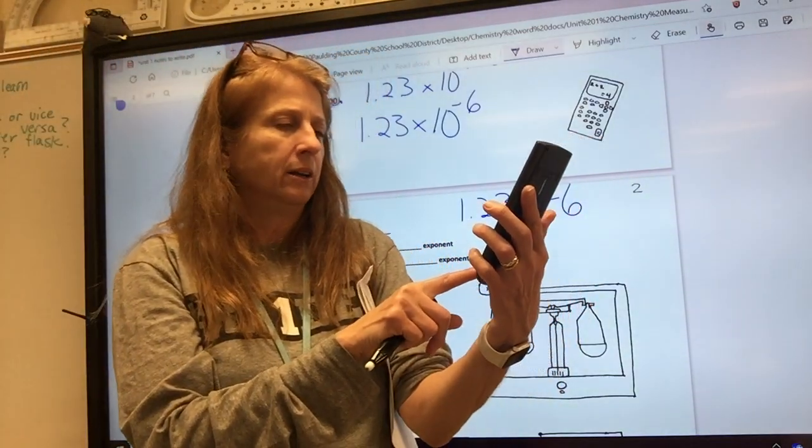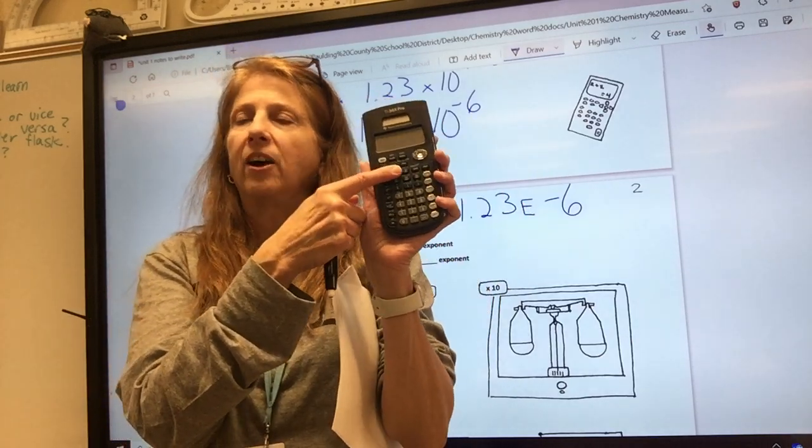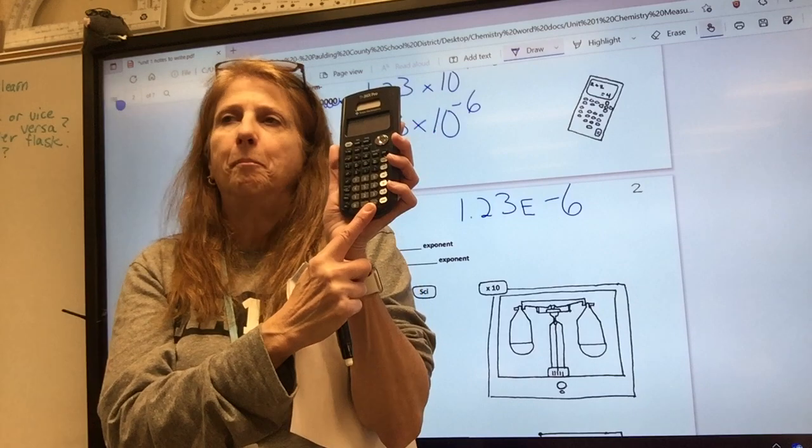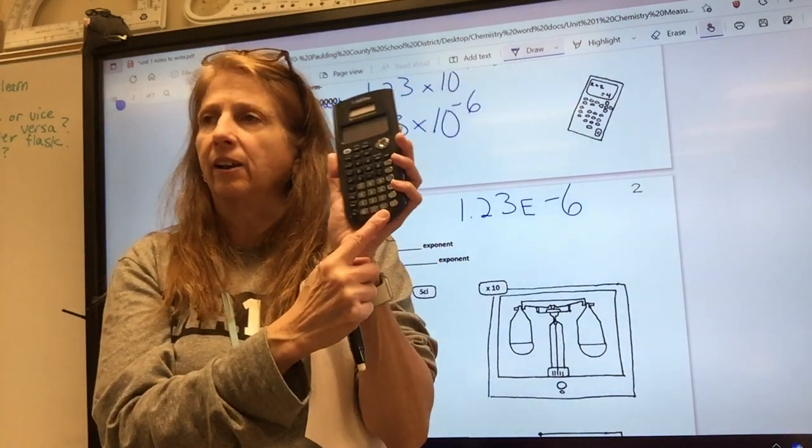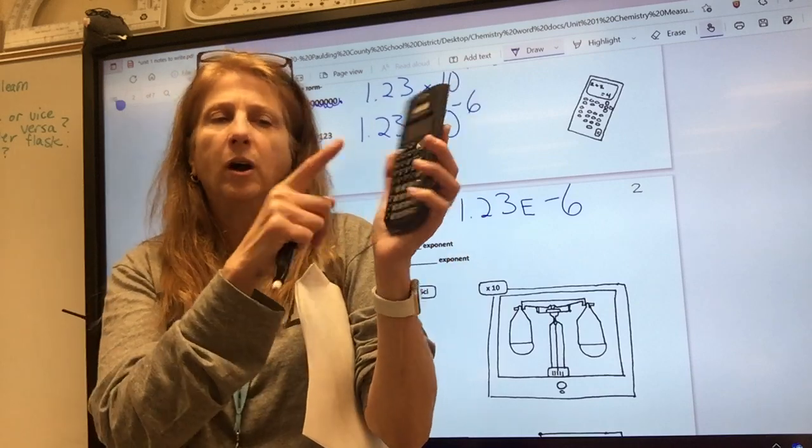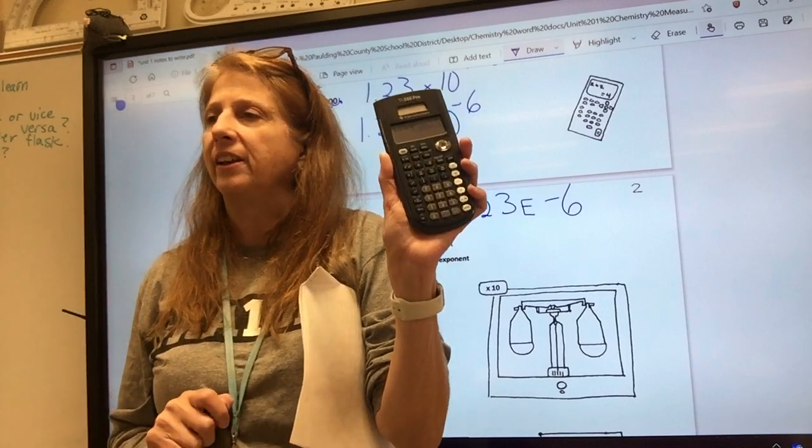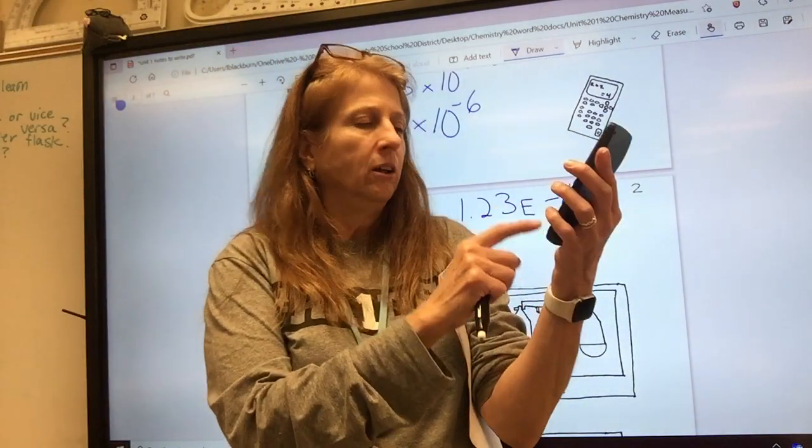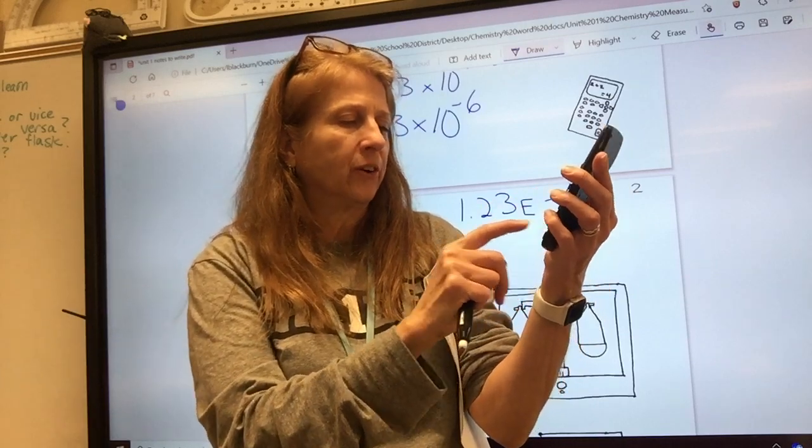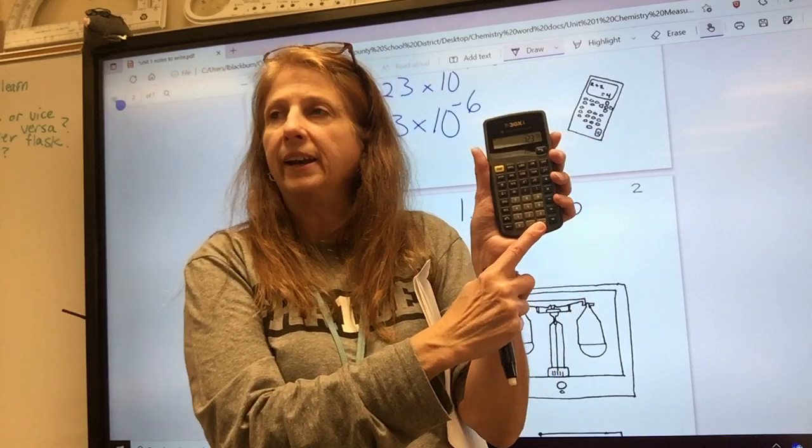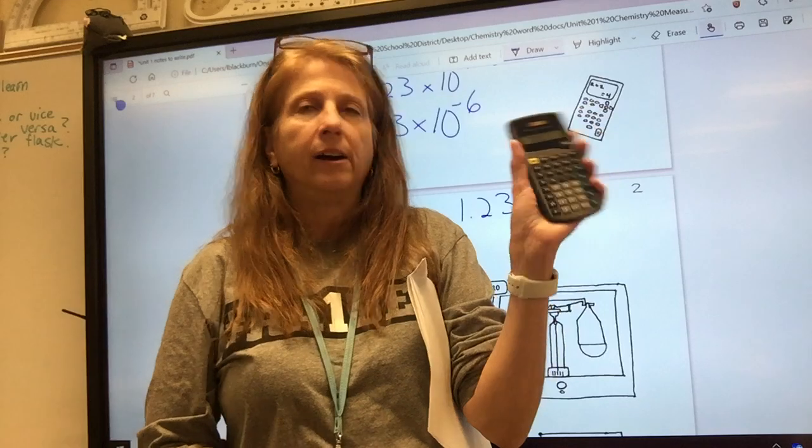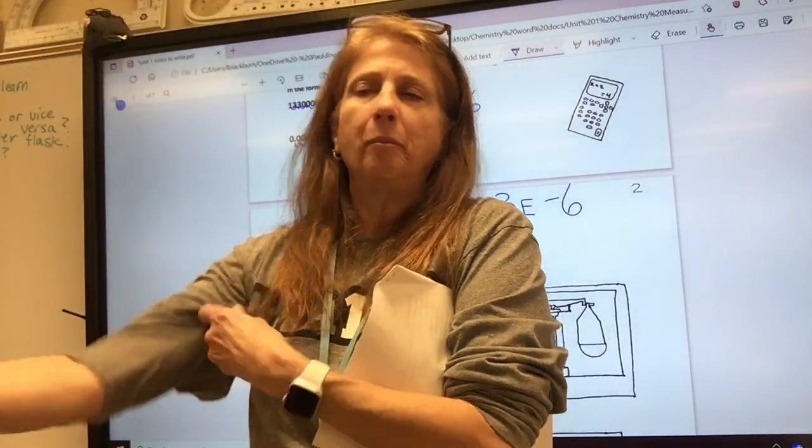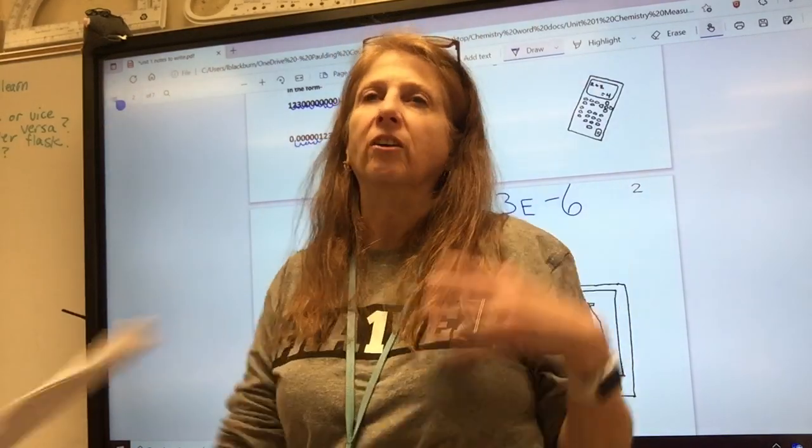What about if you've got this one? Here your EE button is right there. So everybody with this calculator give it a try. Turn it on, 1.23 EE, negative is down here not minus, minus goes in the middle of things, negative is here on the bottom, negative six. You don't go up to exponent land, you hit enter and it took it out of scientific notation for us.